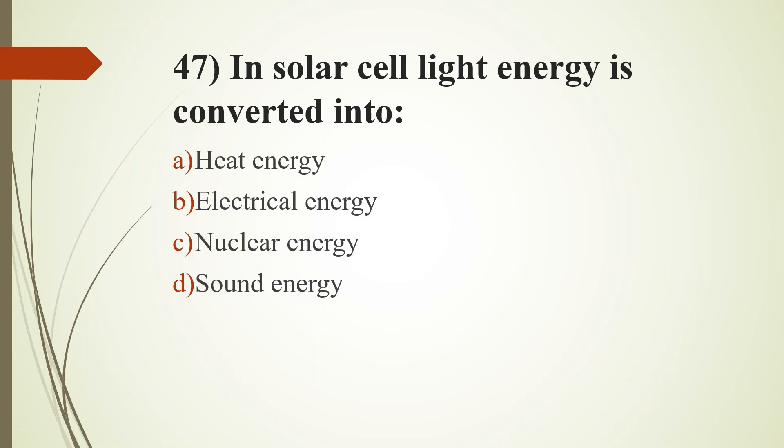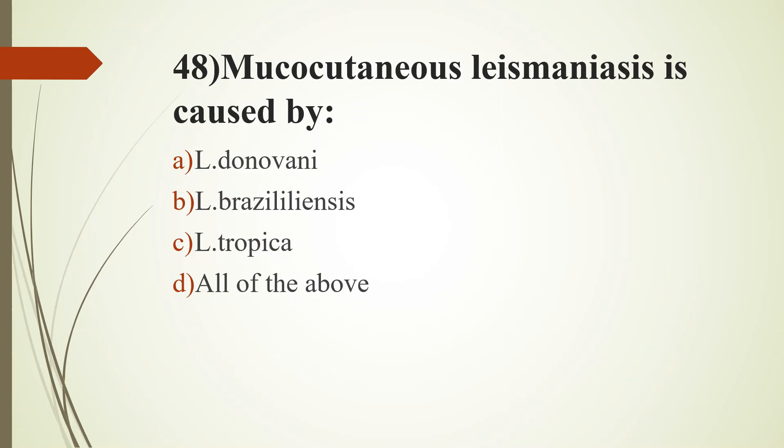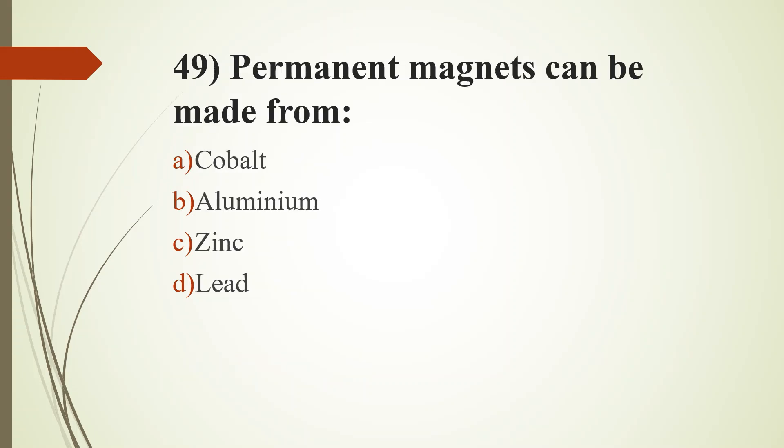47th question. In solar cell, light energy is converted into: option A, heat energy; option B, electrical energy; option C, nuclear energy; option D, sound energy. Answer is option B, electrical energy. 48th question. Mucocutaneous leishmaniasis is caused by: option A, leishmania donovani; option B, leishmania braziliensis; option C, leishmania tropica; option D, all of the above. Answer is option B, leishmania braziliensis. 49th question. Permanent magnets can be made from: option A, cobalt; option B, aluminum; option C, zinc; option D, lead. Answer is option A, cobalt.